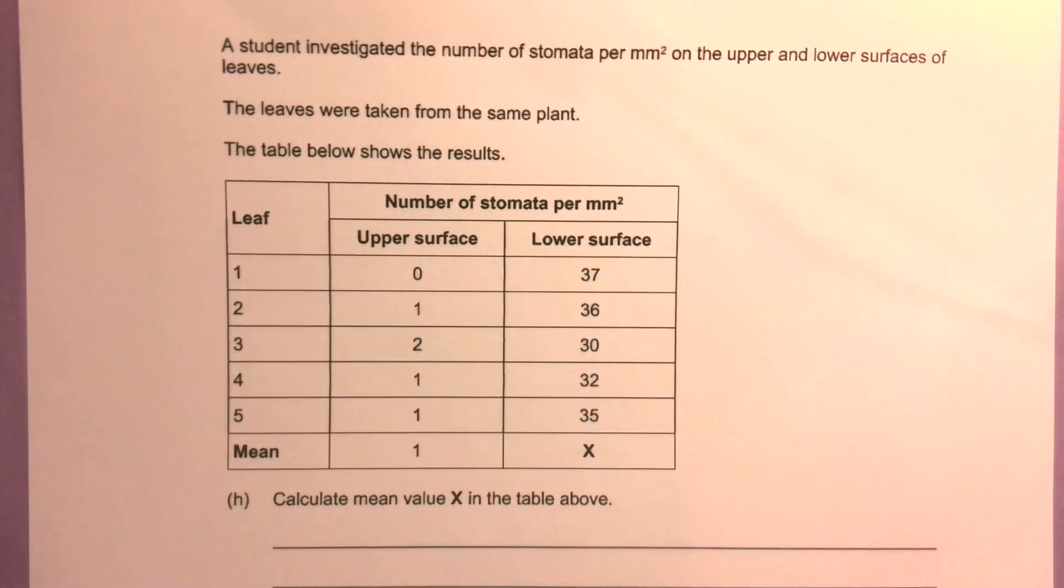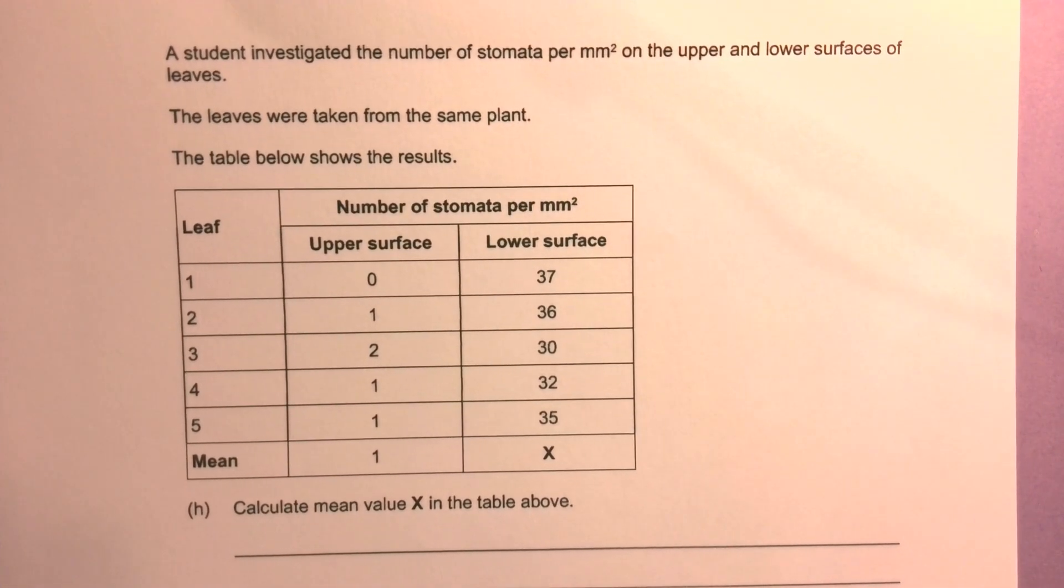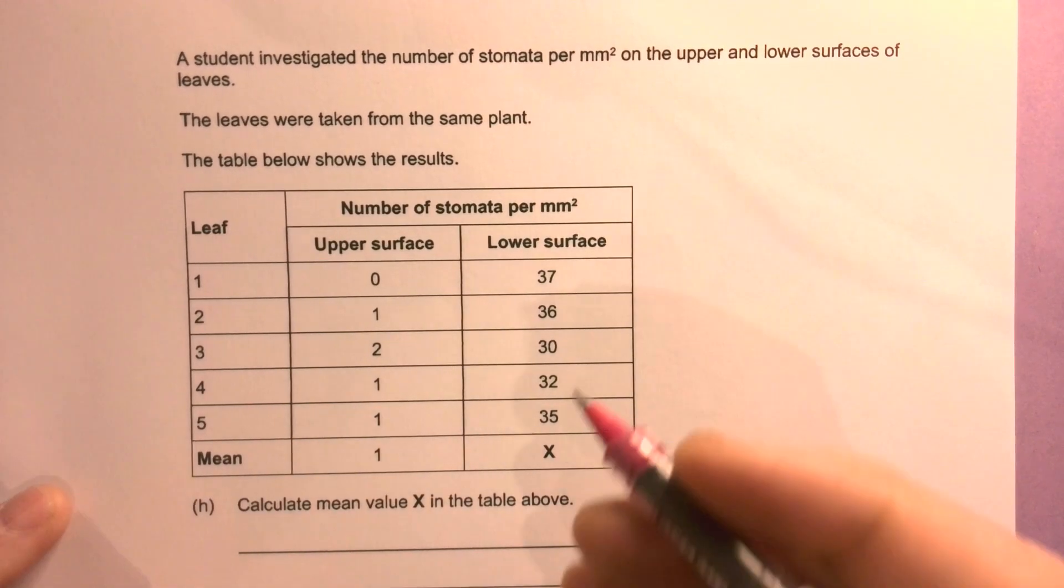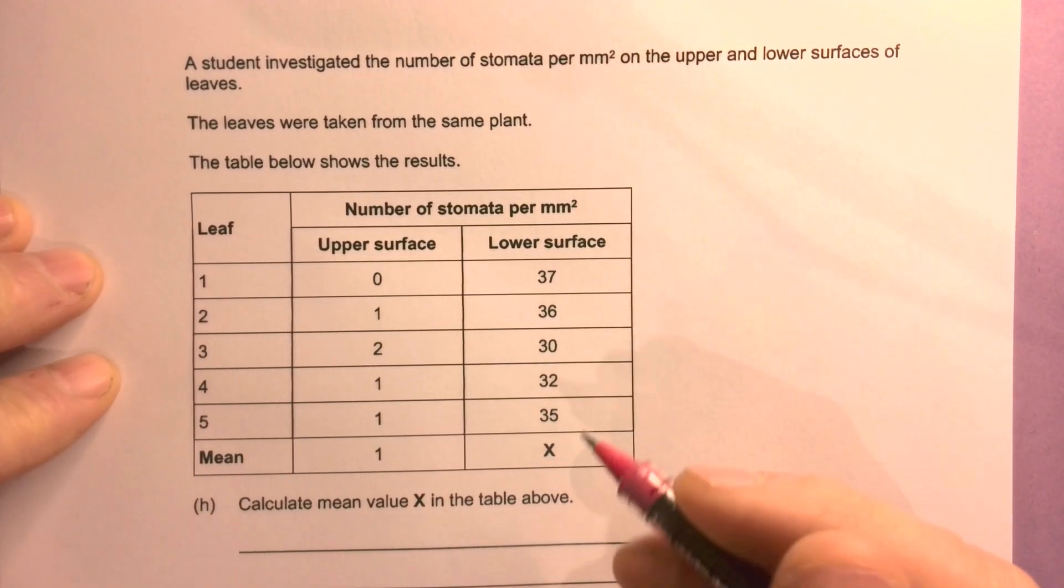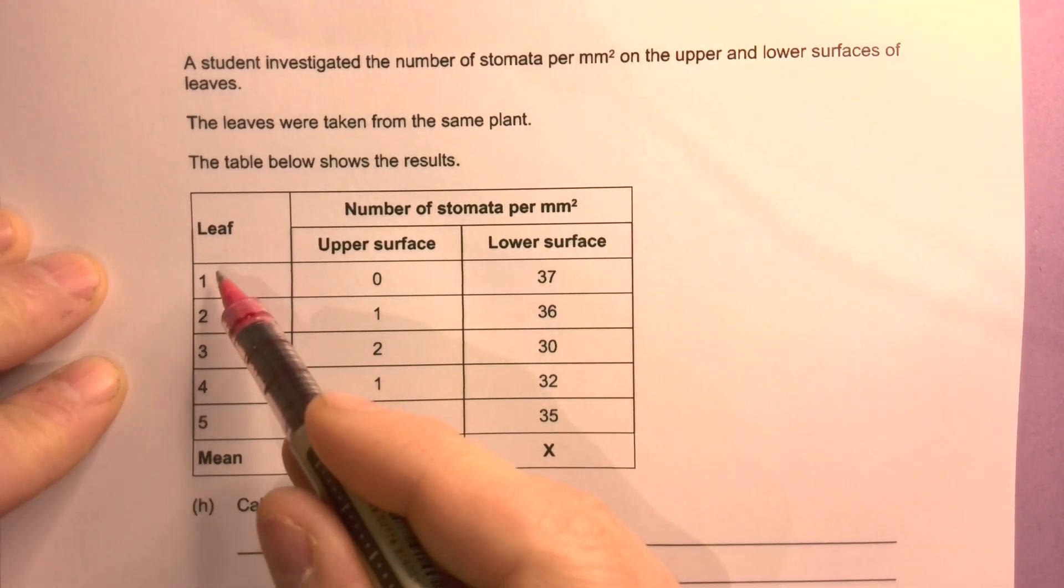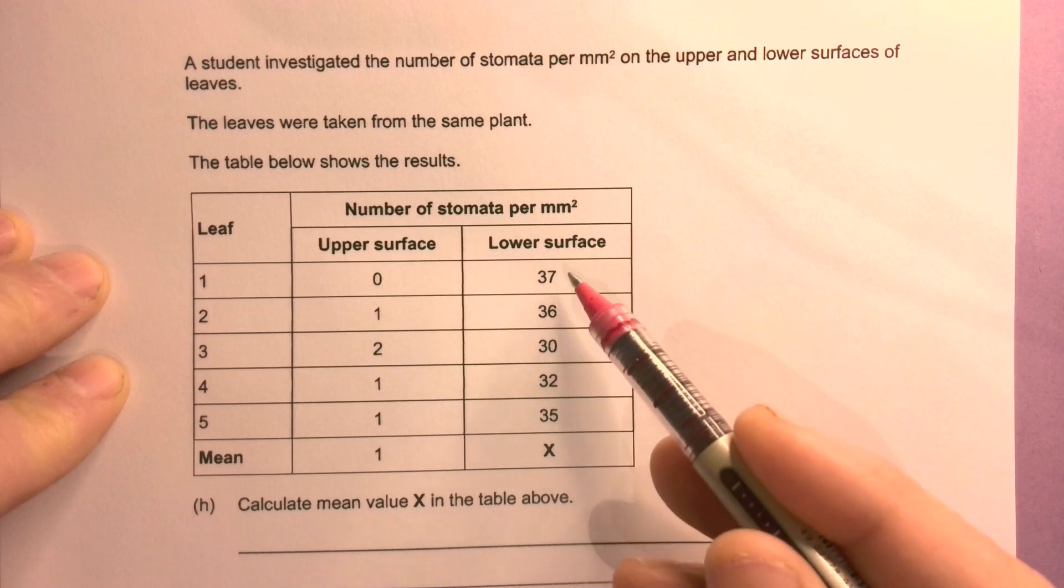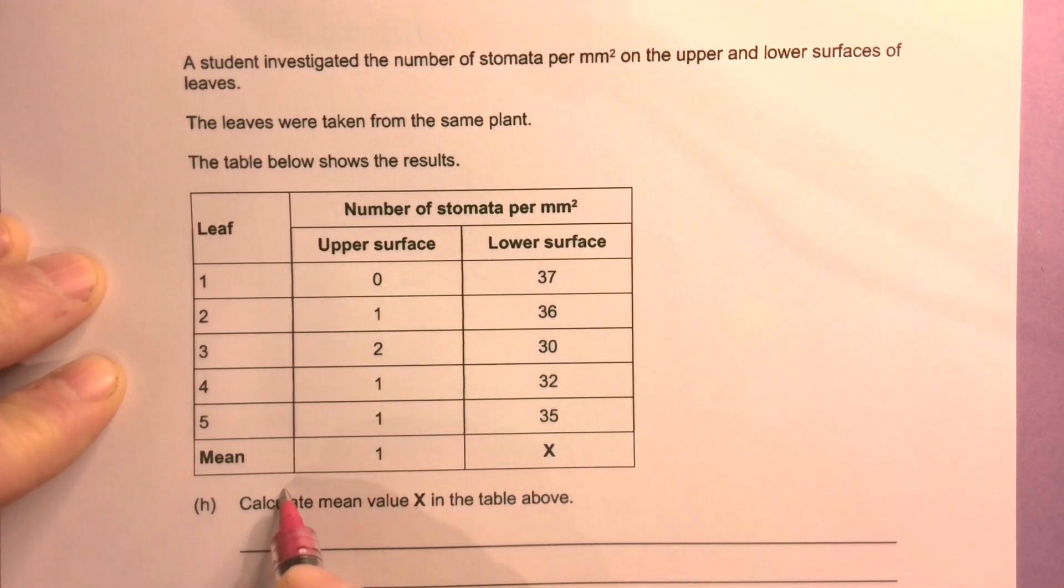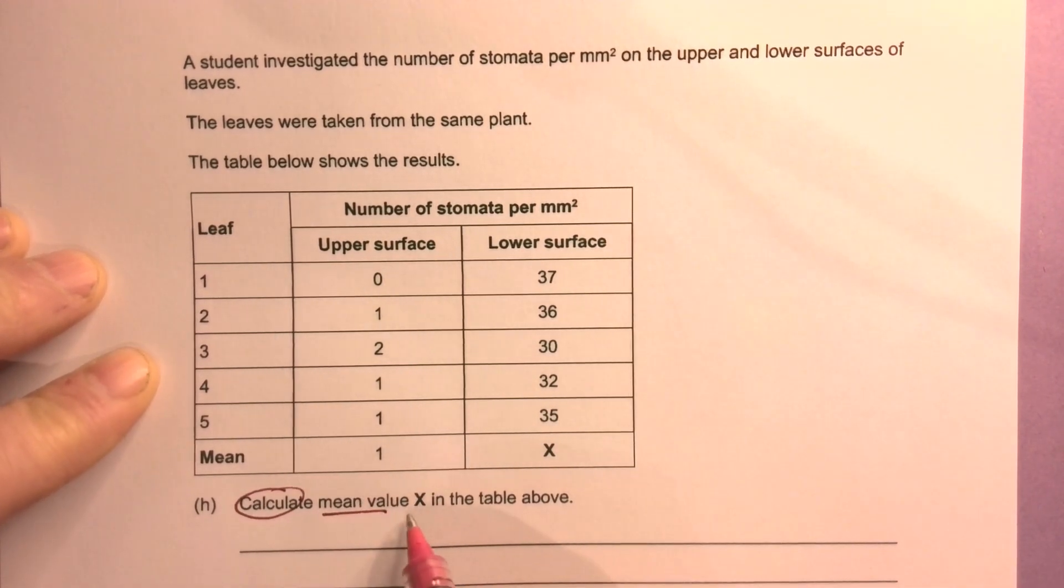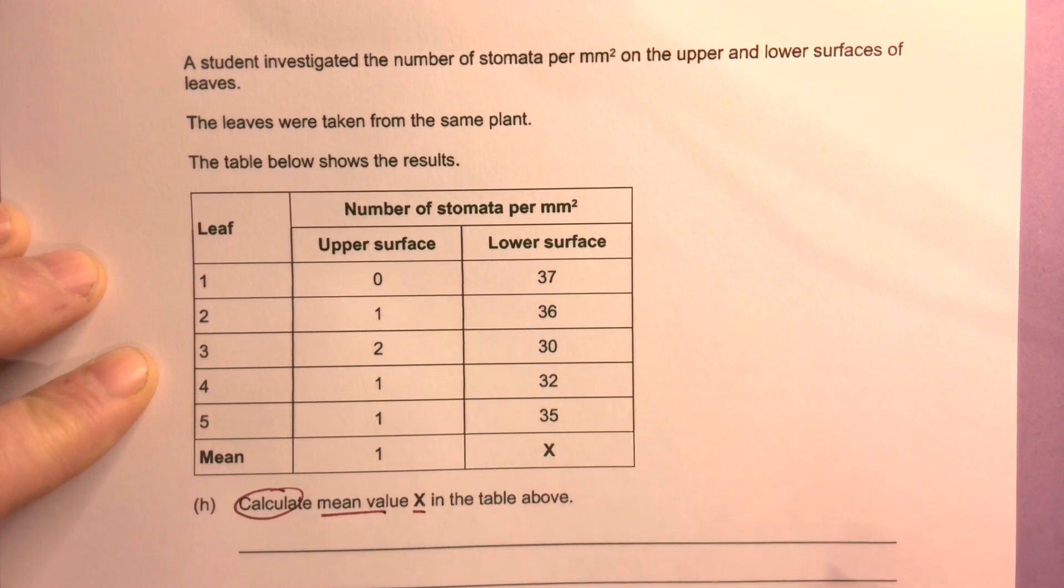A student investigated the number of stomata per millimetre squared on the upper and lower surfaces of leaves. The leaves were taken from the same plant. The table below shows the results - five different leaves. Upper surface, number of stomata, lower surface. Calculate the mean value X in the table above. It's worth two marks.